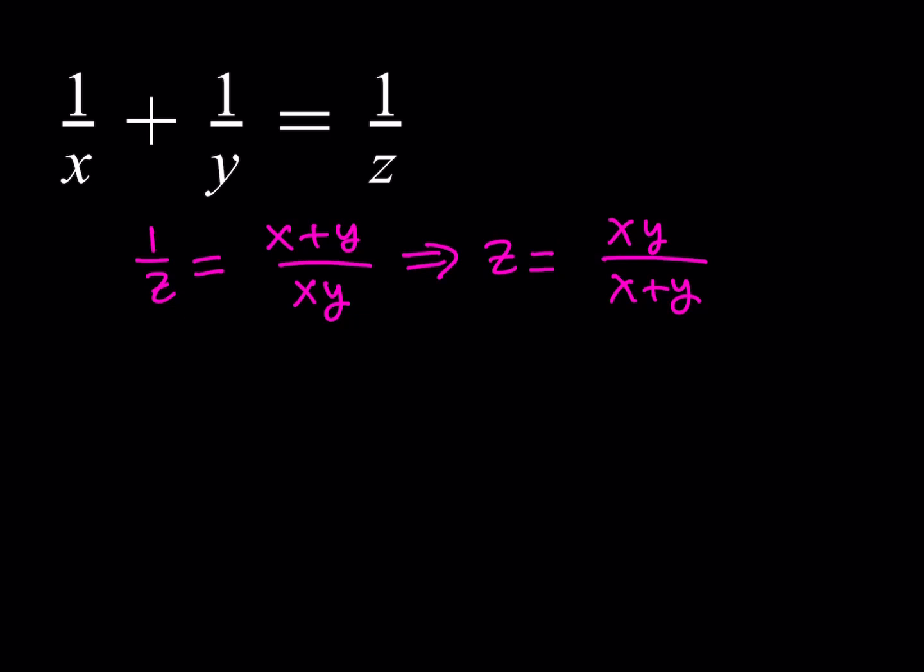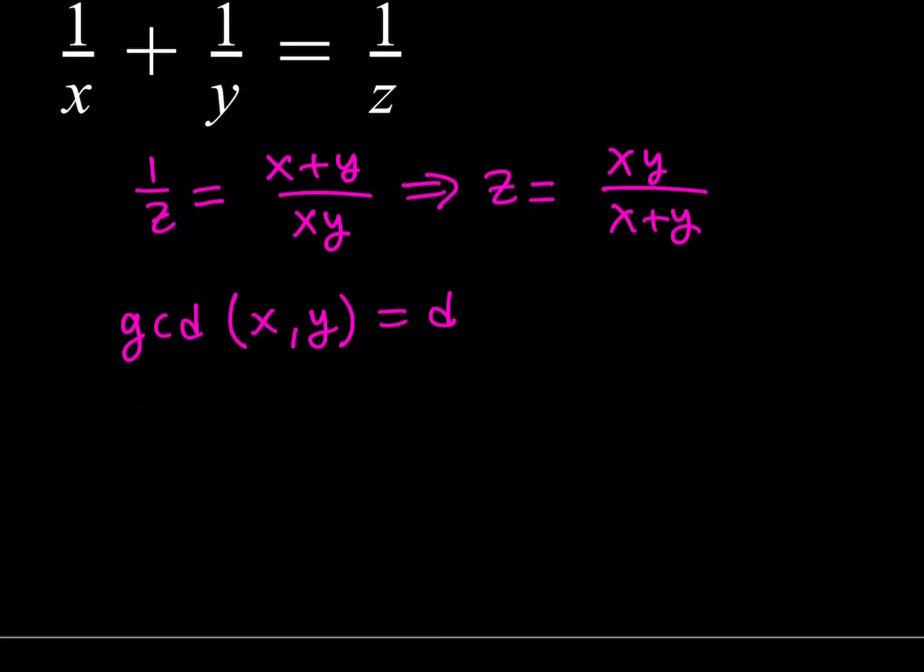So for that purpose, let's define the greatest common divisor of x and y as d, such that d divides x and y, and there's nothing larger than that which divides x and y, which means that x is a multiple of d, so I can write it as x equals dm.